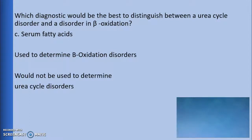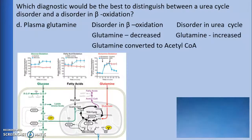The third option is to test serum fatty acids. Levels of serum fatty acids can be abnormal with beta-oxidation disorders. However, these are not normally affected with urea cycle disorders, so this is not the best test either. The final option is a plasma glutamine test. With a disorder in beta-oxidation, glutamine is decreased. When acetyl-CoA is deficient due to a beta-oxidation disorder, glutamine can be converted to acetyl-CoA through enzymatic reactions in both the mitochondria and the cytosol.